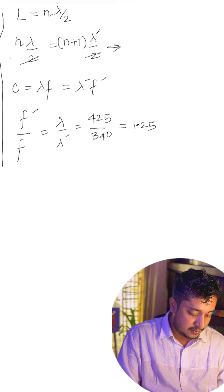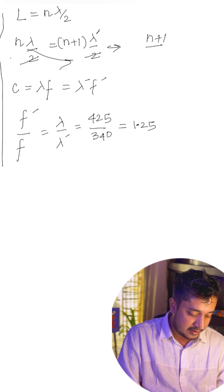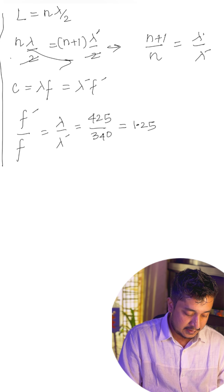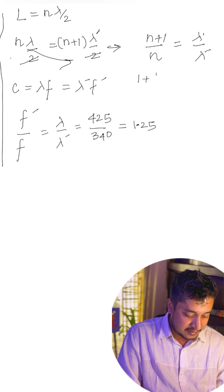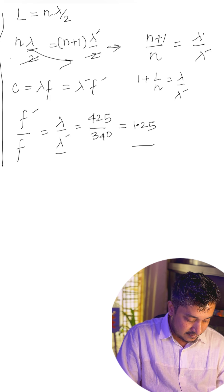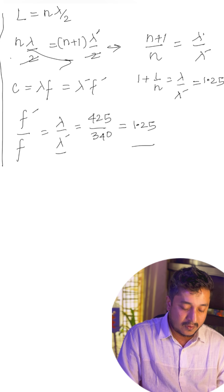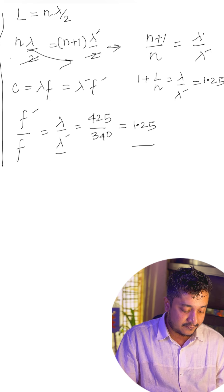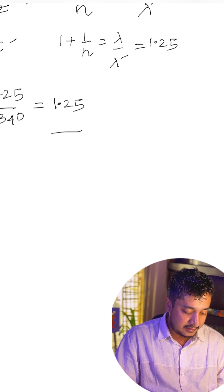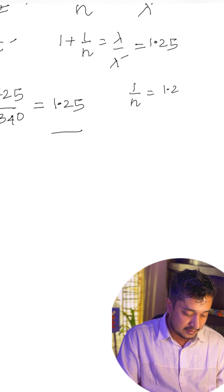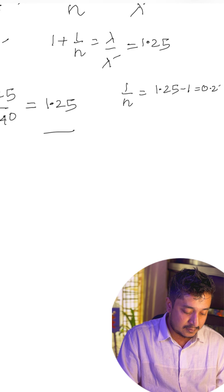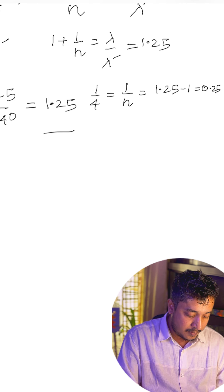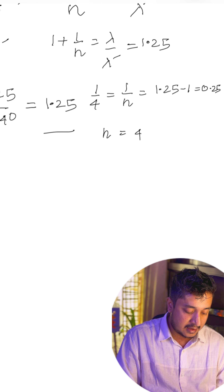Cancelling the 2s in the earlier equation and rearranging: (n+1)/n = λ/λ'. Splitting this: 1 + 1/n = λ/λ' = 1.25. Taking 1 to the other side: 1/n = 0.25 = 1/4, which gives us n = 4. So the nth harmonic is the fourth harmonic.